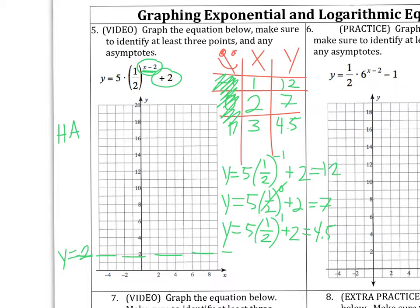So we've got 1 comma 12. We've got 2 comma 7. And we've got 3 comma 4.5. And you might see that this is a nice exponential decay function. It's going to curve downwards and look something like this. Hopefully you're a better artist than I and get a nicer looking curve.